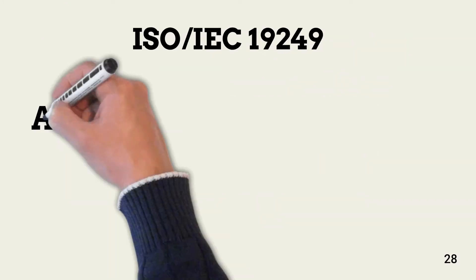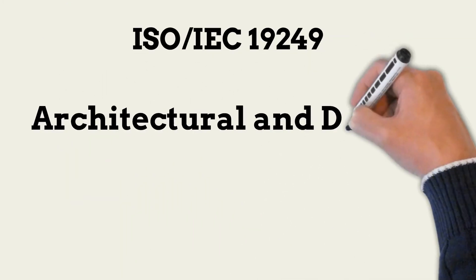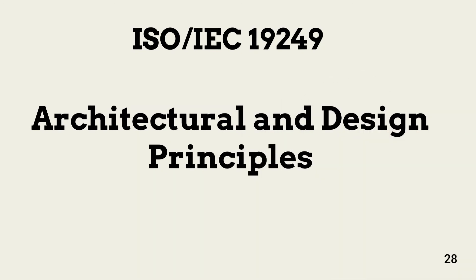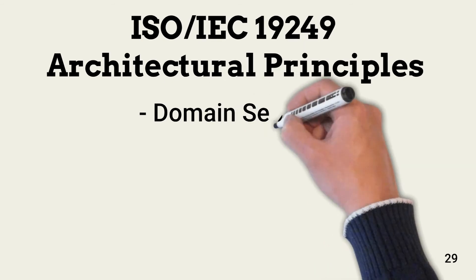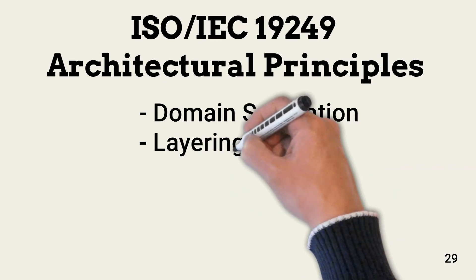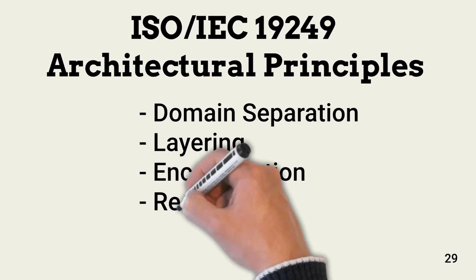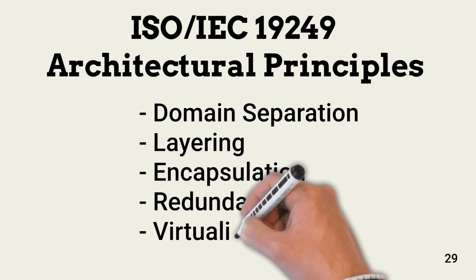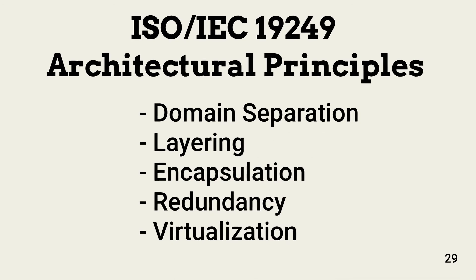Next is the ISO standard set of design principles. The ISO standard does not replace the previous principles — it augments them. ISO-IEC 19249 is divided into two sets: architectural principles and design principles. There are five architectural principles: domain separation, layering, encapsulation, redundancy, and virtualization.